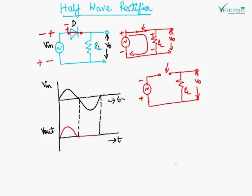When the next positive cycle comes, the diode will again be a short circuit and I will get an output. When the negative cycle comes, the diode will again be an open circuit and there will be no current. Since current is always flowing in only one direction through the load, we can say that the output voltage is a DC. The current flows for only half of the input cycle, which is why this is called a half wave rectifier. Its efficiency is very small and the ripple is very high.